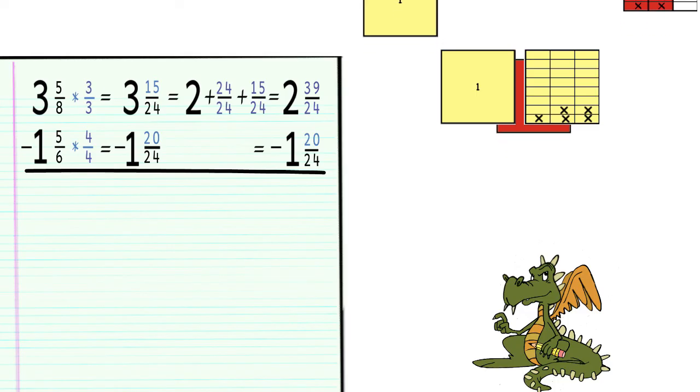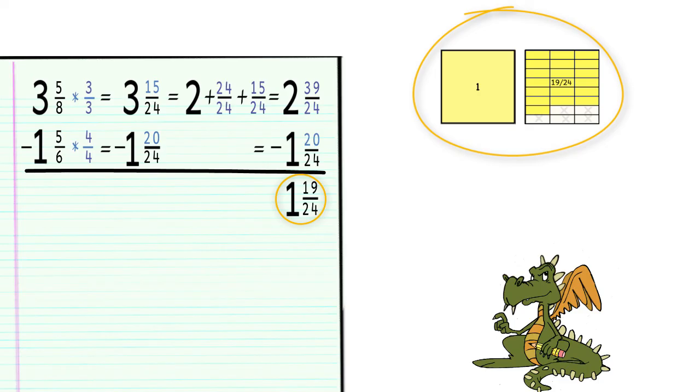On paper, we subtract the whole number and the fractions. For the numerator, we get 19. And of course, the denominator does not change, since the whole was still cut into 24 pieces. We can see that both on paper and with the fraction tiles, 3 and 5 eighths minus 1 and 5 sixths equals 1 and 19 twenty-fourths.